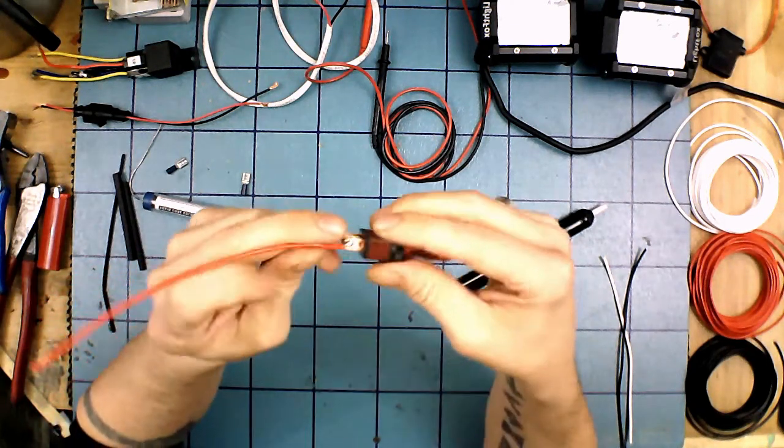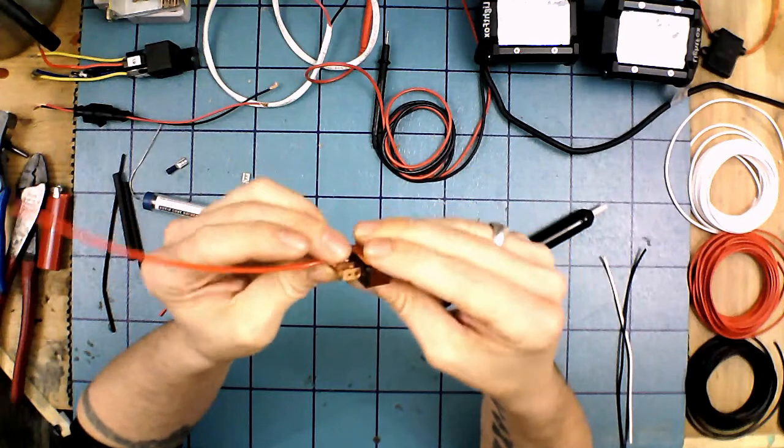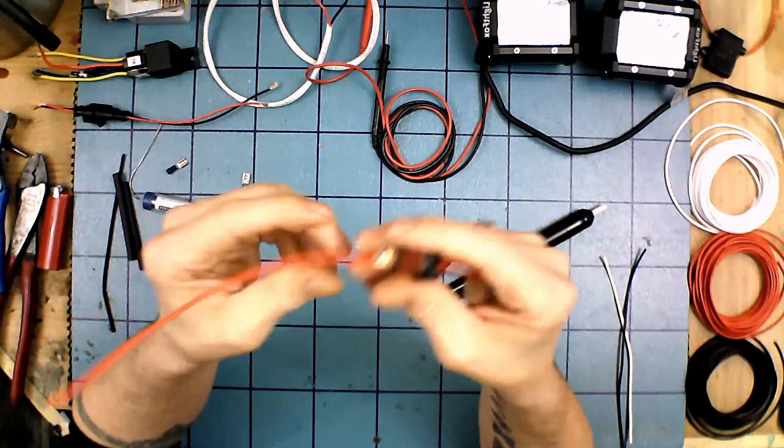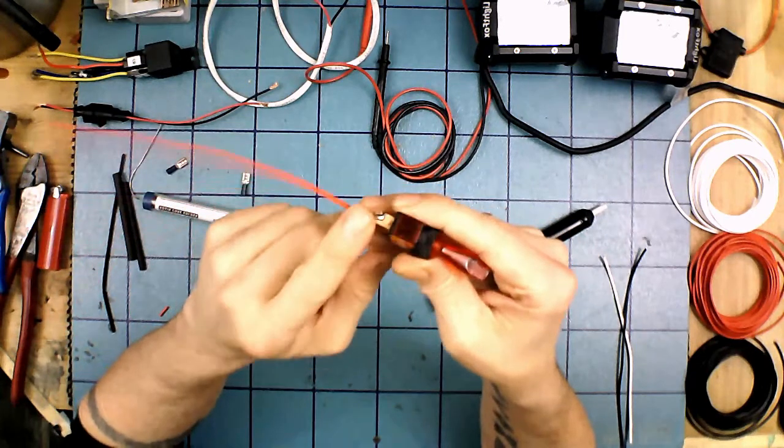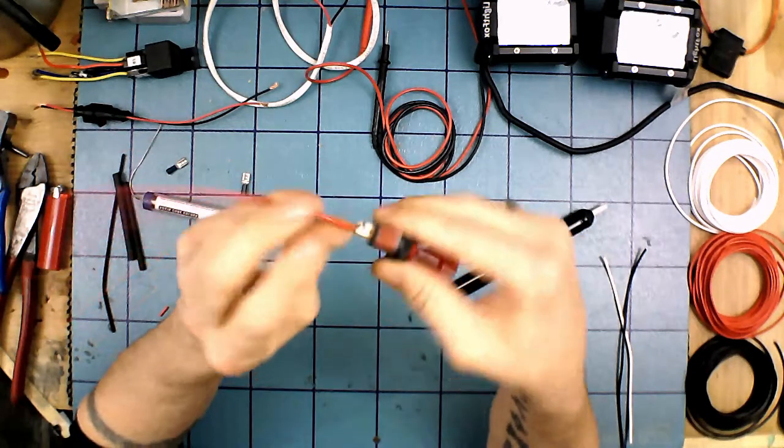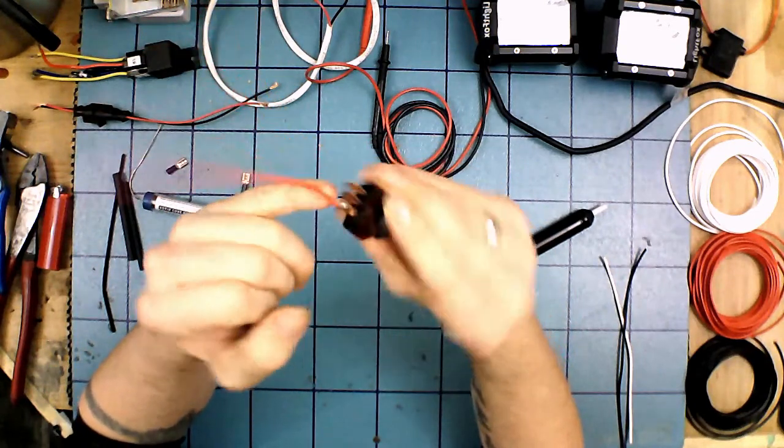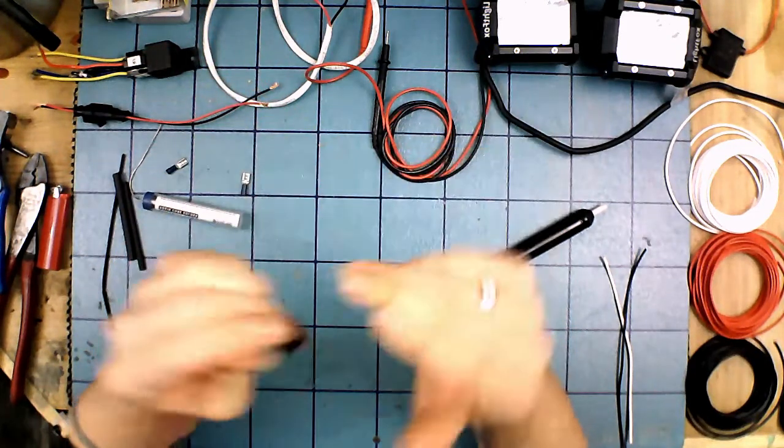A little solder on the end of your iron so it creates the contact. And now you have a very good secure connection on there. That will not come off. The wire will break before that comes out of there.